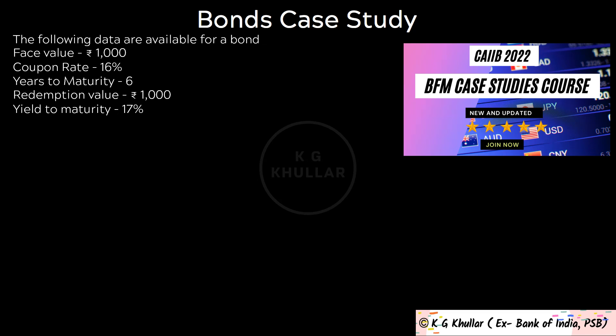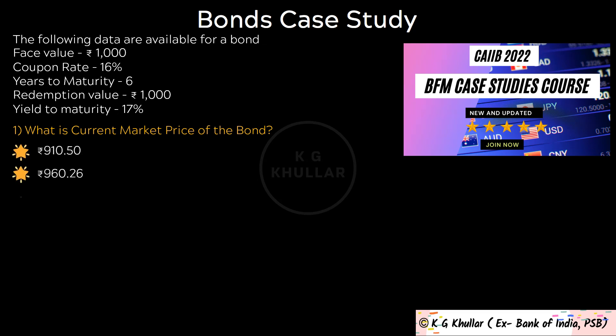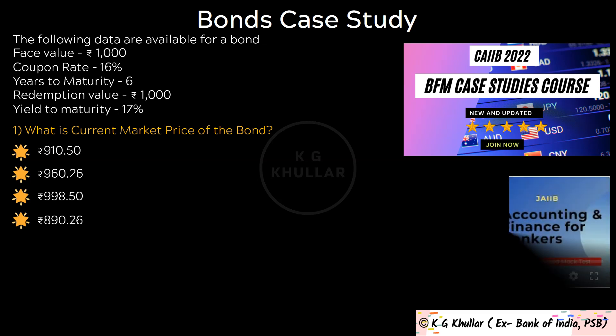Based on the data given, answer the next 5 questions. The first question is: what is the current market price of the bond? Now there are 2-3 methods to find the current market price of a bond, and the easiest of them all is using the yield to maturity formula, which I have explained in my GAB AFB mock test video in question number 23.